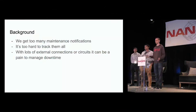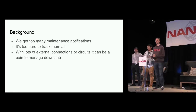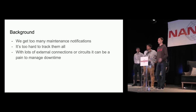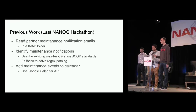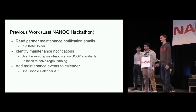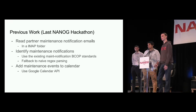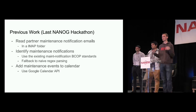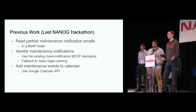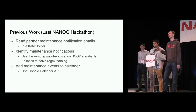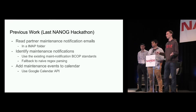A little bit of background before we get started: we all get too many maintenance notifications. We have a lot of peers, they do a lot of maintenance, and it can be very hard to track all of these notifications. When you have a lot of external connections and circuits, it can be a real pain to manage the downtime and communication around these. So we set forth with the plan to improve the communication and the notifications themselves. At the previous NANOG hackathon, we worked on a project that allowed us to read partner maintenance notification emails — we read emails from an IMAP folder and tried to identify which of those emails are maintenance notifications.